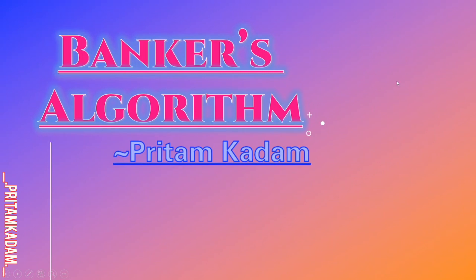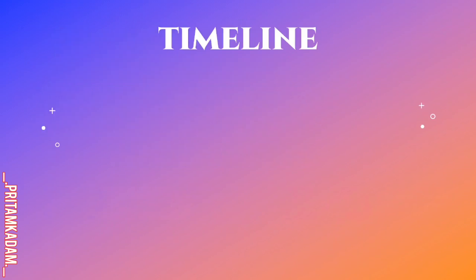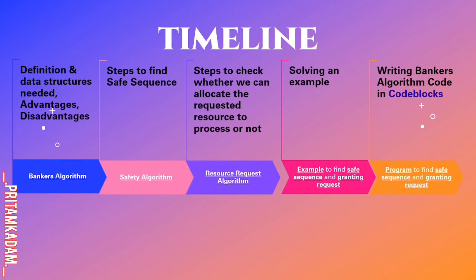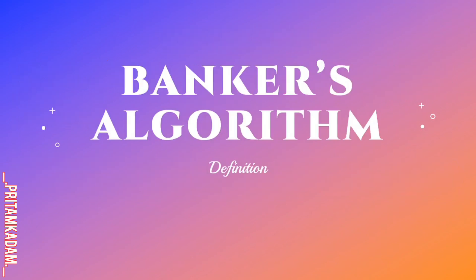Hi everyone, today in this video I will tell you about the Banker's Algorithm. We will go through this timeline: first the definition, then the data structures needed, advantages and disadvantages, safety algorithm steps to find safe sequence, resource request algorithm, steps to check whether we can allocate requested resources to a process, an example to find safe sequence and granting request, and then we will write a program.